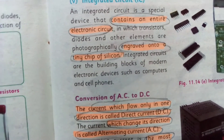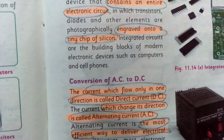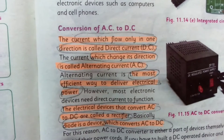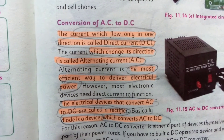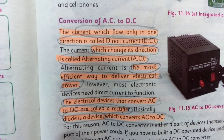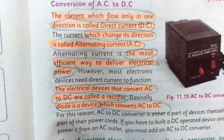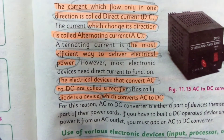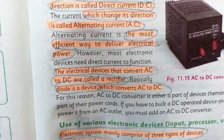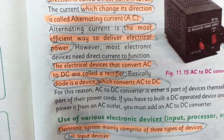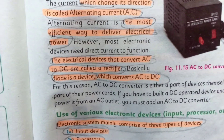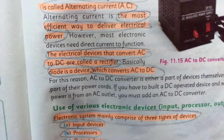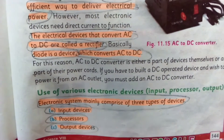In an integrated circuit, transistors, diodes, and other components are photographically etched onto a tiny chip of silicon. Regarding conversion of AC to DC: the current which flows only in one direction is called direct current (DC), while the current which changes direction is called alternating current (AC). The most efficient way to deliver electrical power is AC. The electrical device that converts AC to DC is called a rectifier.